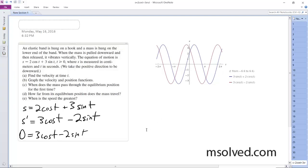So what we can do here is I'll put this over here. So we got 2 sine t is equal to 3 cosine t.